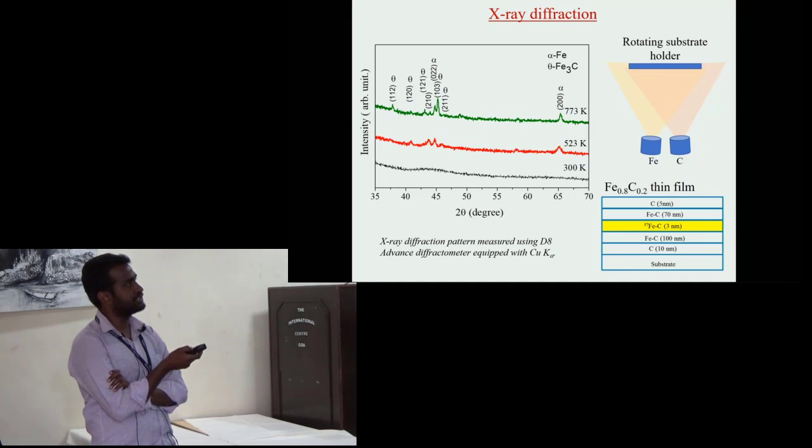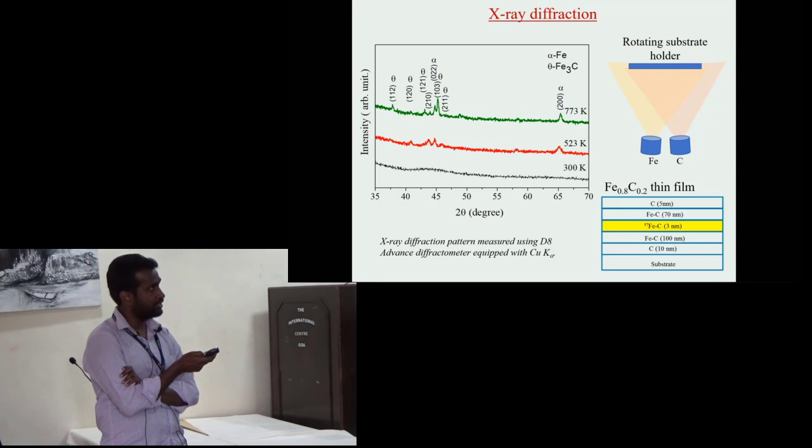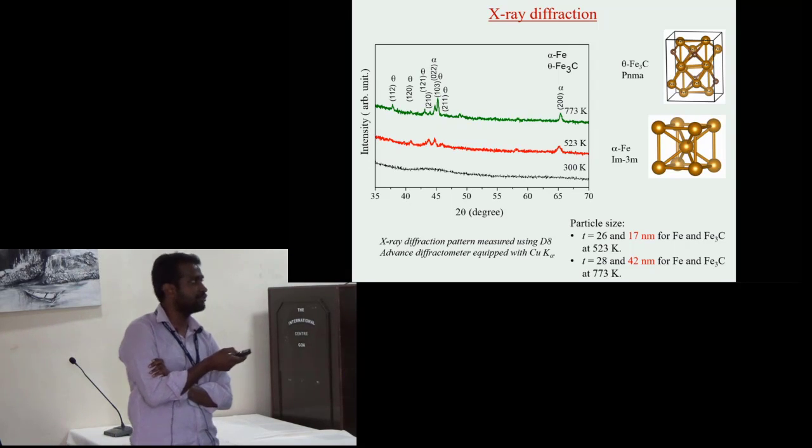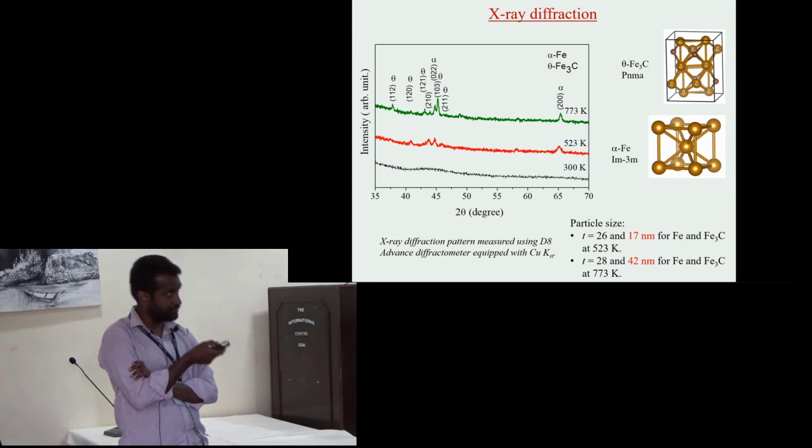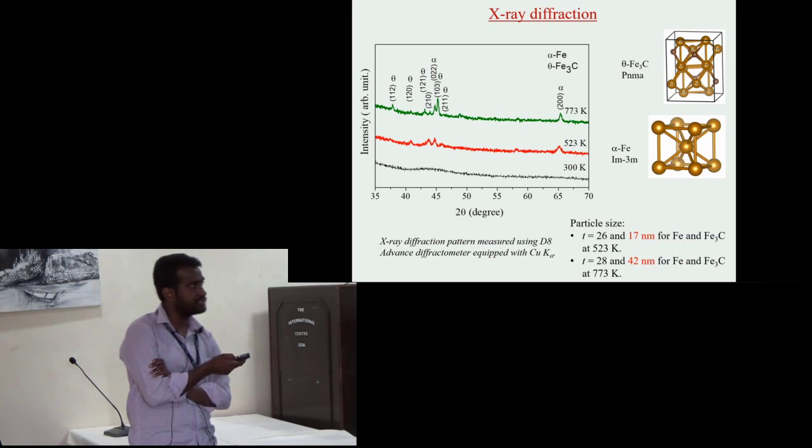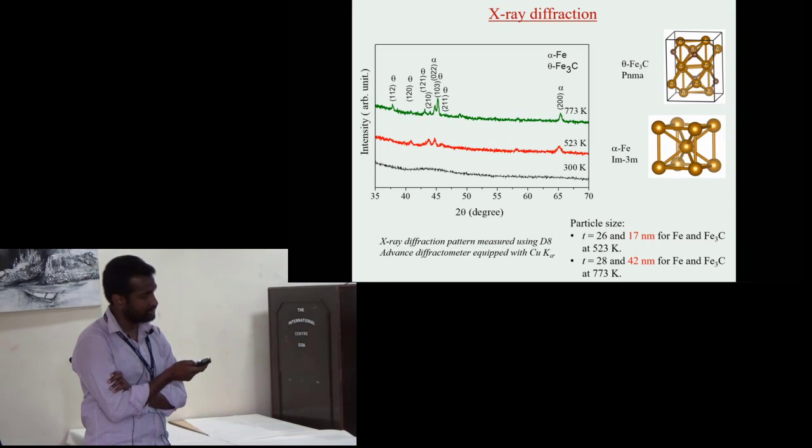The XRD measurement shows initially the sample is amorphous at room temperature. Increasing substrate temperature there are various reflections that show growth of Fe3C and Fe. Increasing substrate temperature there are no significant changes in phase formation except increase in particle size. For Fe3C particle size is 17 and 42 nanometer with increase in substrate temperature.